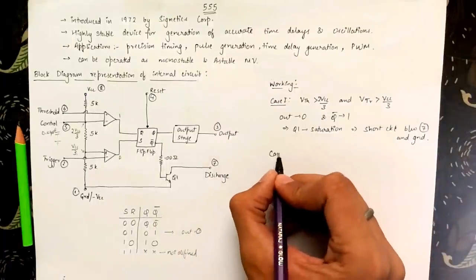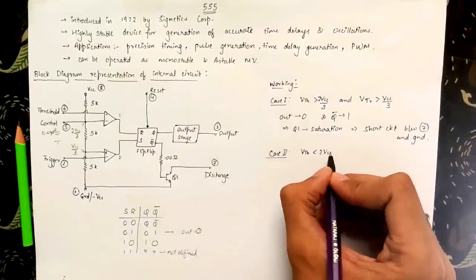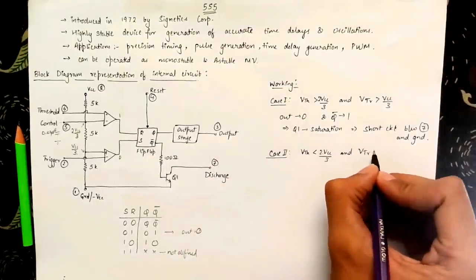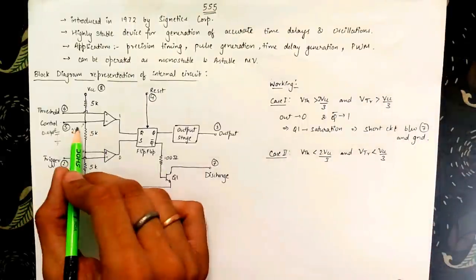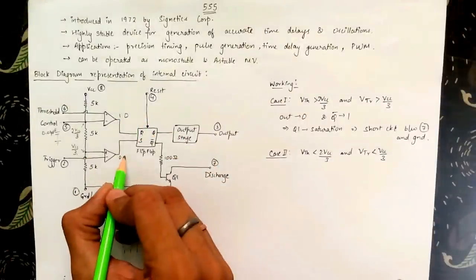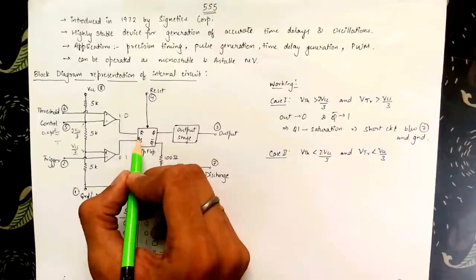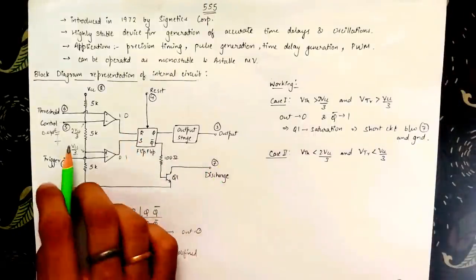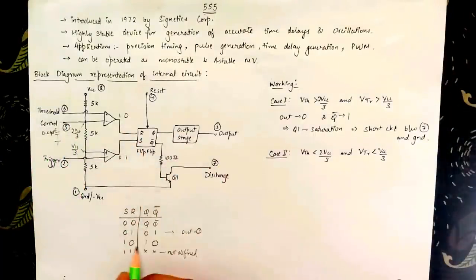Now let's look into the second case when the threshold voltage is less than 2Vcc by 3 and the trigger voltage is less than Vcc by 3. For this case the output of comparator 1 is logic 0 as the threshold voltage is lower than the reference voltage of 2Vcc by 3 and output of comparator 2 is logic 1 as trigger voltage is lower than Vcc by 3.